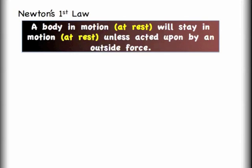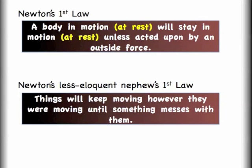Sometimes people call Newton's first law the law of inertia. Inertia being something that is somewhat similar to mass, and that if I have a lot of mass I have a lot of inertia. But it's really the resistance to wanting to change motion. So if I'm sitting still and I have a lot of mass I have a lot of inertia that says I do not want to start moving. If there is a speeding train coming towards you that is very massive you should get out of the way because its inertia means it doesn't want to stop moving. I could take Newton's first law and I could write it in a slightly different way, so maybe this is Newton's less eloquent nephew's first law. It says that things will keep moving however they were moving until something messes with them.